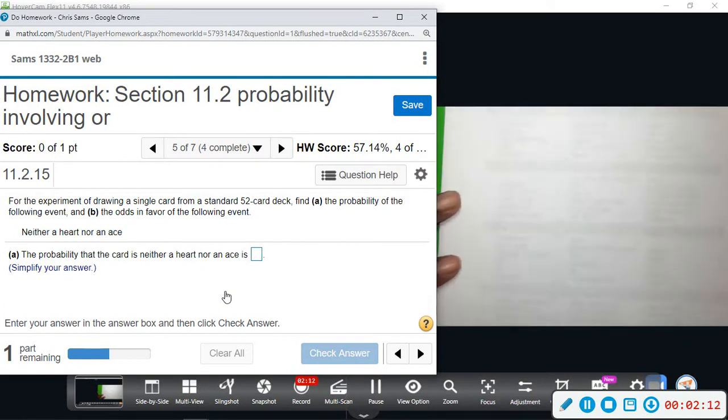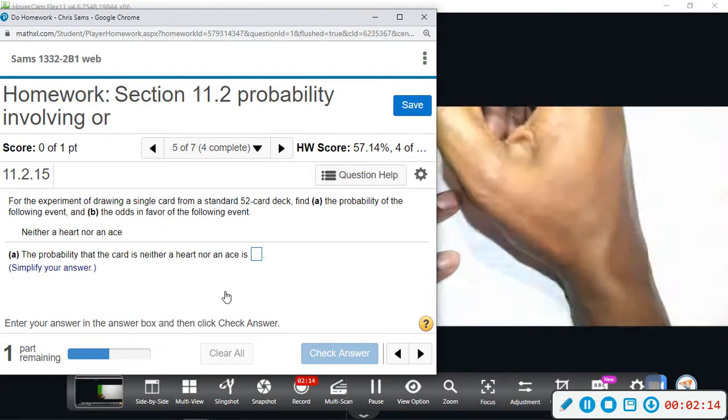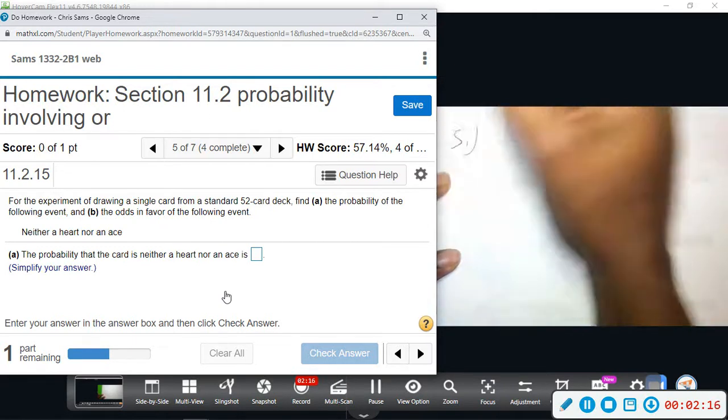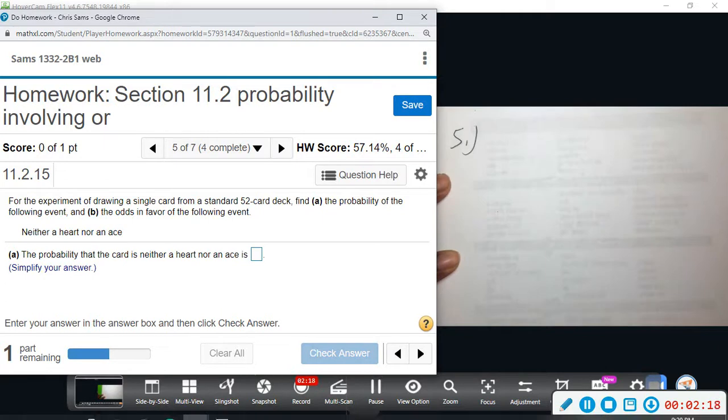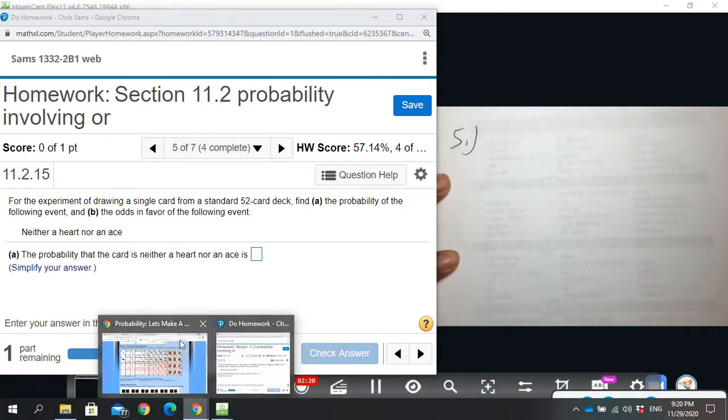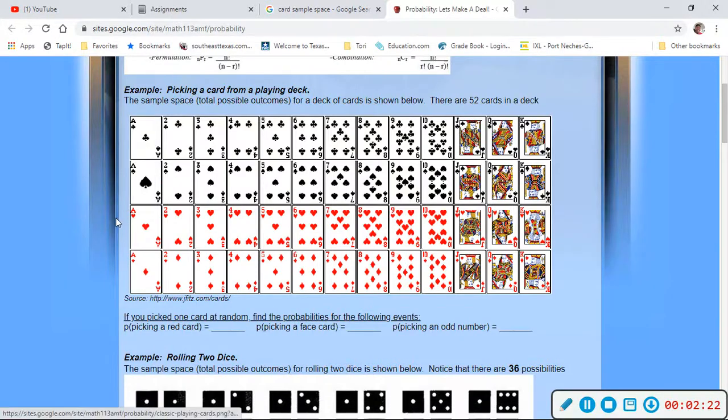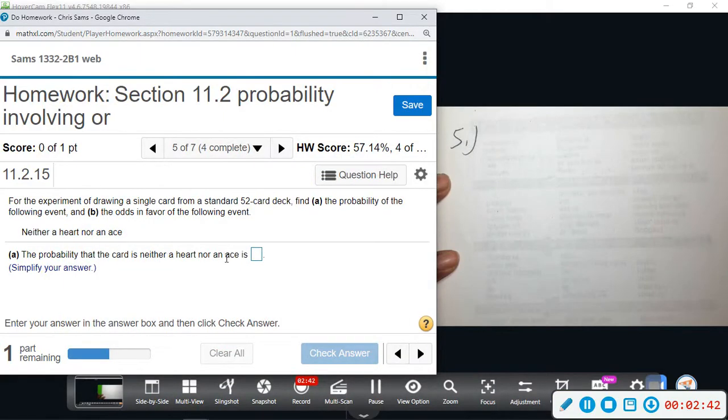Okay, so let's look at the sample space once more. We don't want a heart - there's 13 of them, 13 hearts right across there. We also don't want an ace: one, two, three. We add three because we've already counted this ace in the 13, so 13 and 3 give us 16.